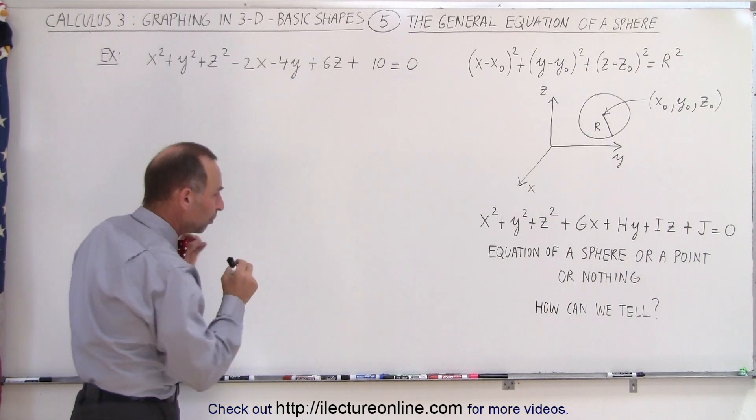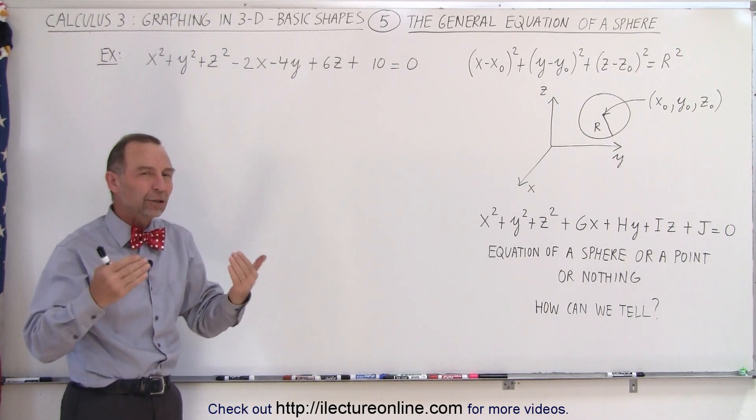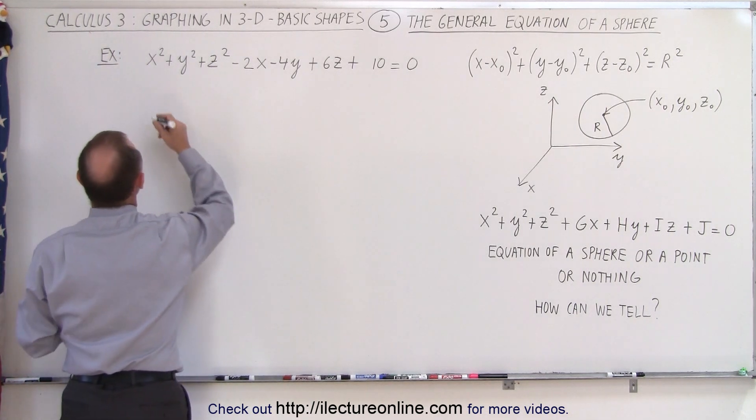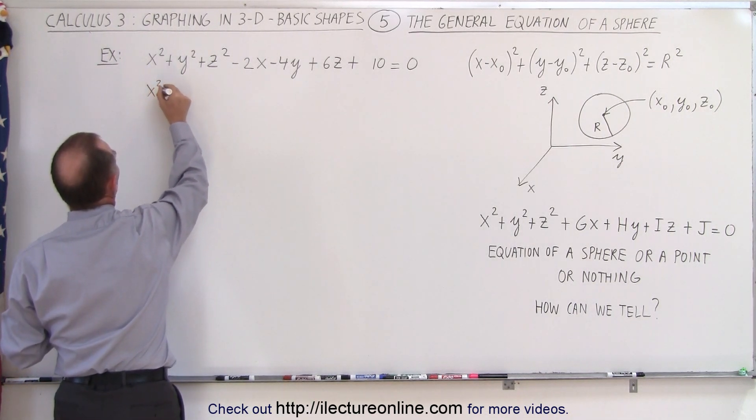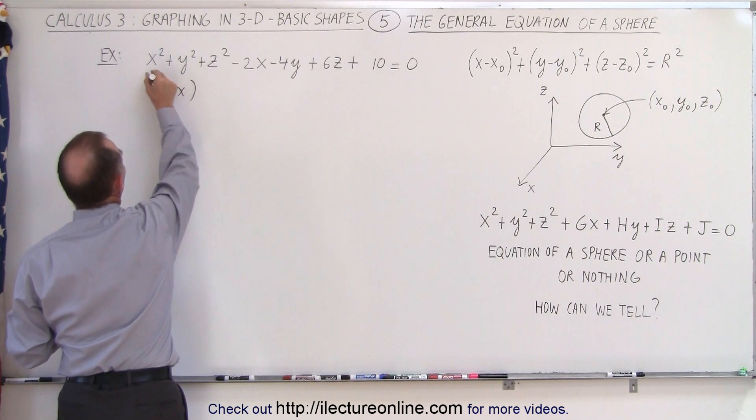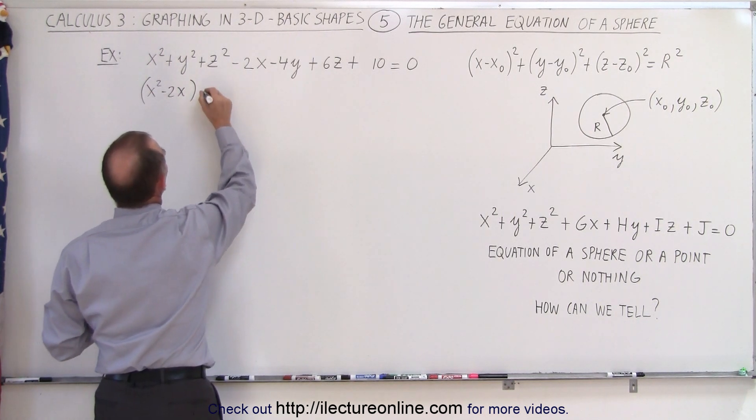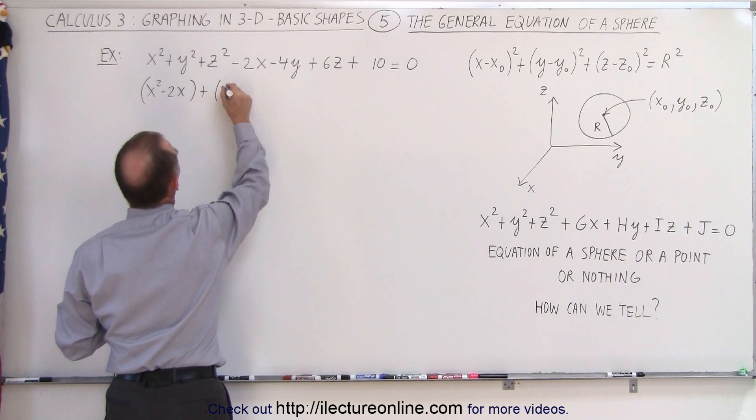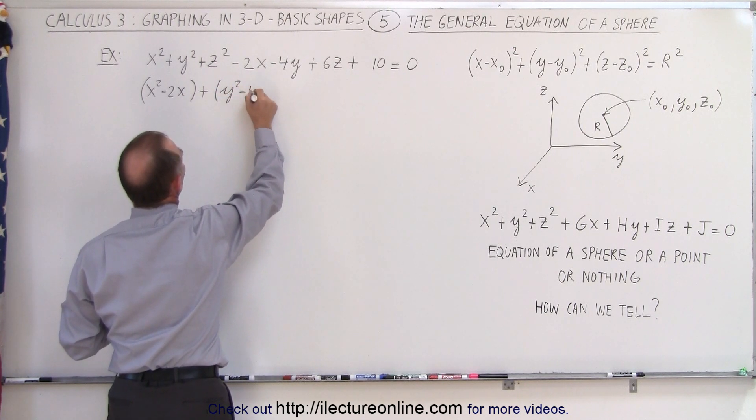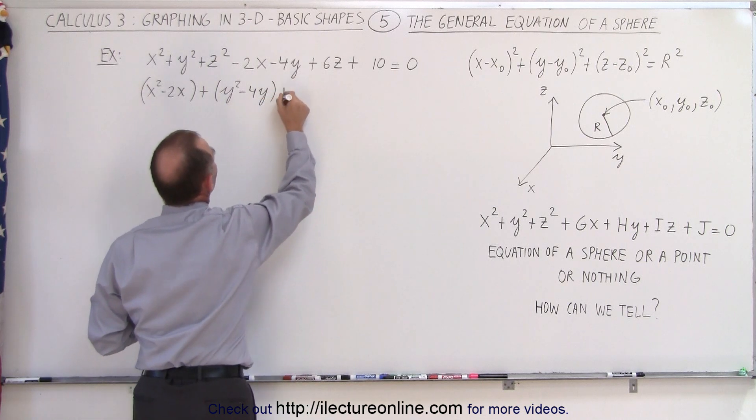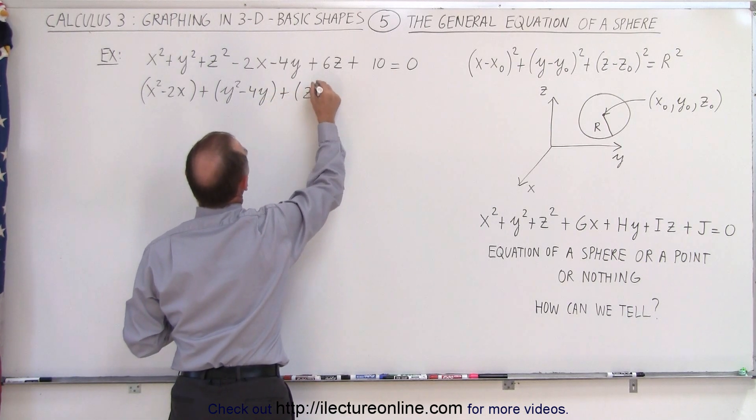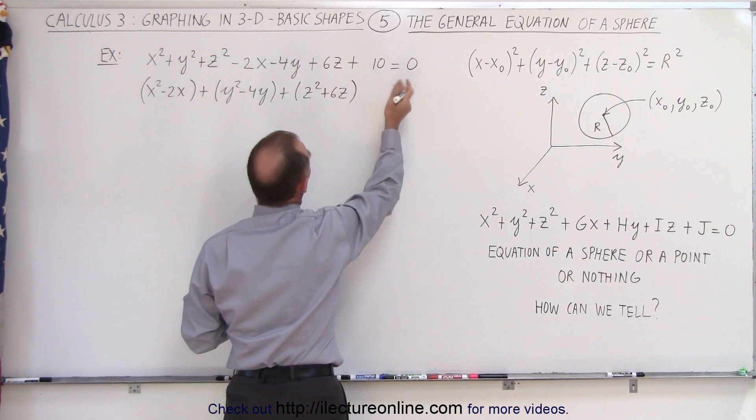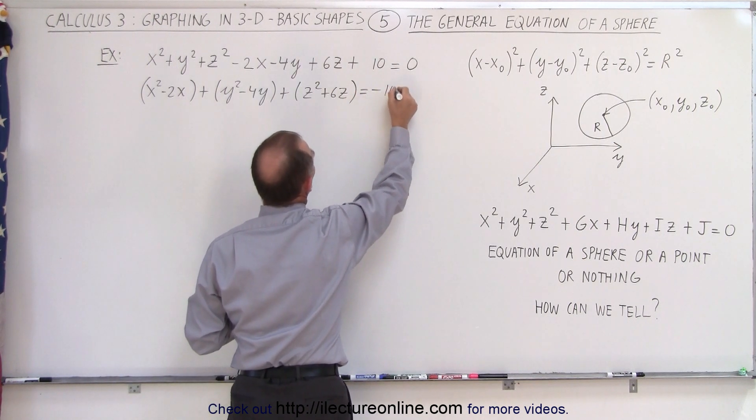So what we're going to do here is employ the technique called completing the square. We're going to pair up the variables and write it like this. So we have x squared minus two x, put that together, and then we have y squared minus four y, and then we take z squared plus six z, and then we're going to write the ten on the other side, so it becomes equal to minus ten.